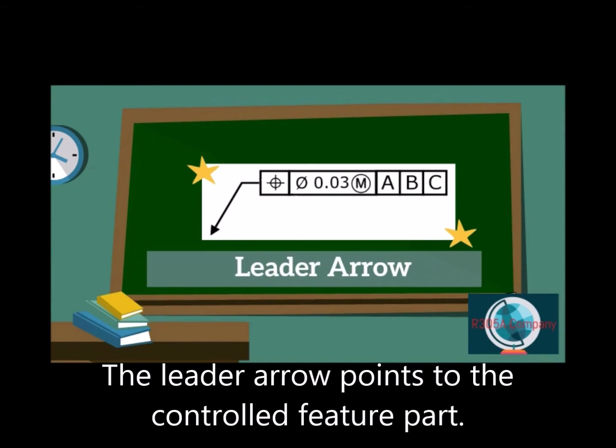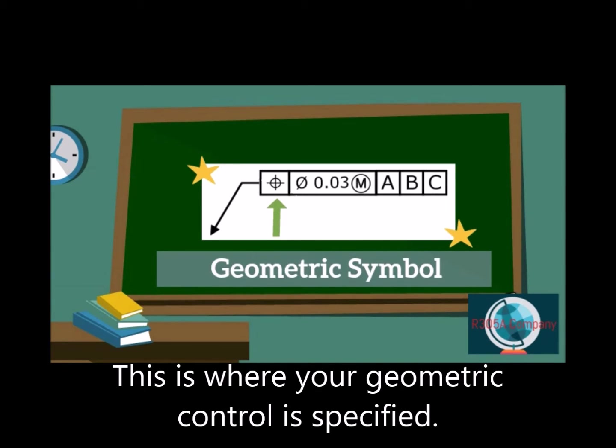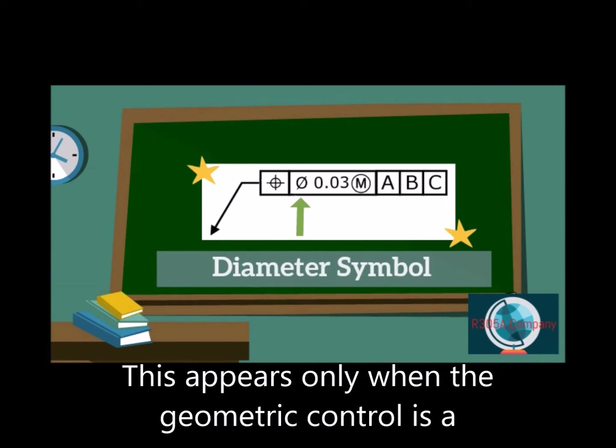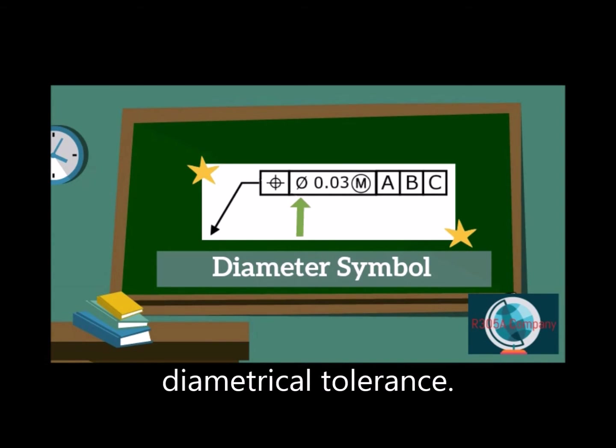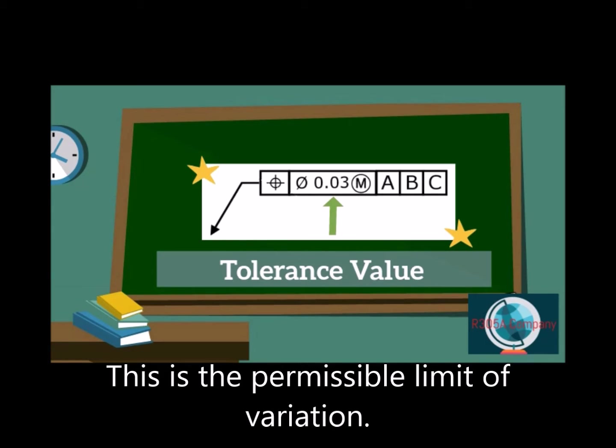The leader arrow points to the controlled feature part. This is where your geometric control is specified. This appears only when the geometric control is the diametrical tolerance. This is the permissible limit of variation.